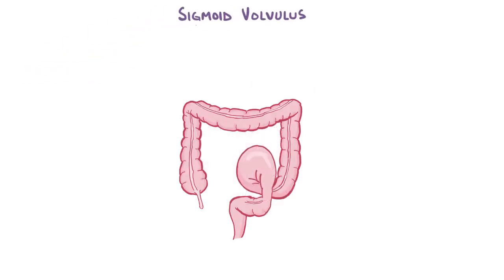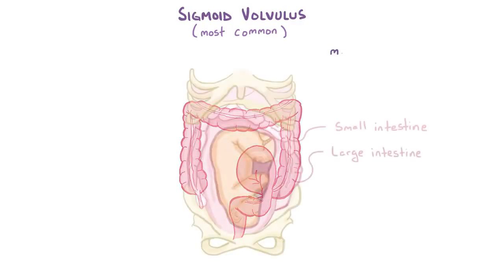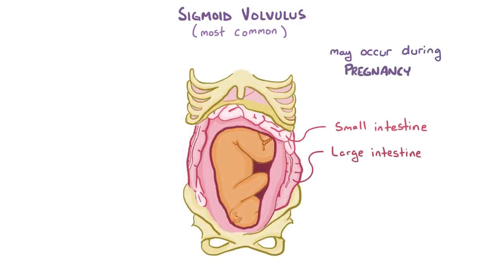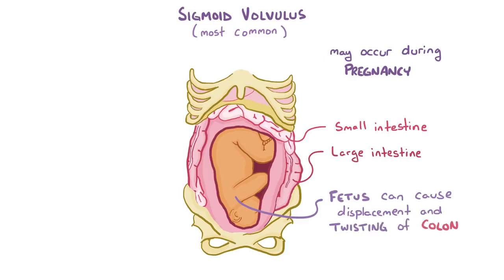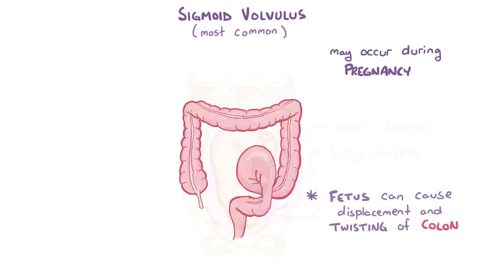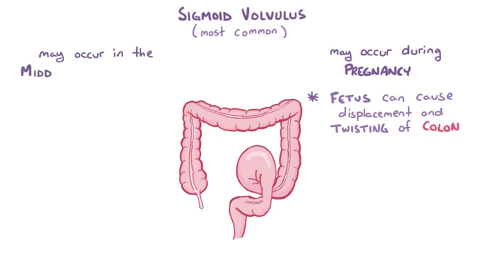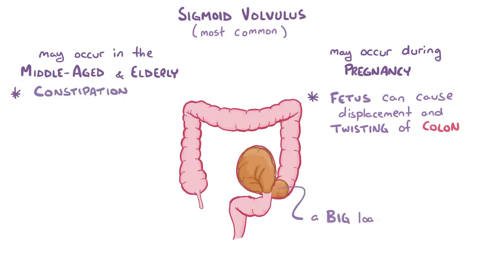A sigmoid volvulus is the most common type of volvulus, and it can happen in a variety of settings — one classic one being pregnancy, because the growing fetus can cause displacement and twisting of the colon. It can also develop in middle-aged and elderly individuals, sometimes as a result of chronic constipation, where a big load of stool can act like a pivot point around which the rest of the colon can twist.